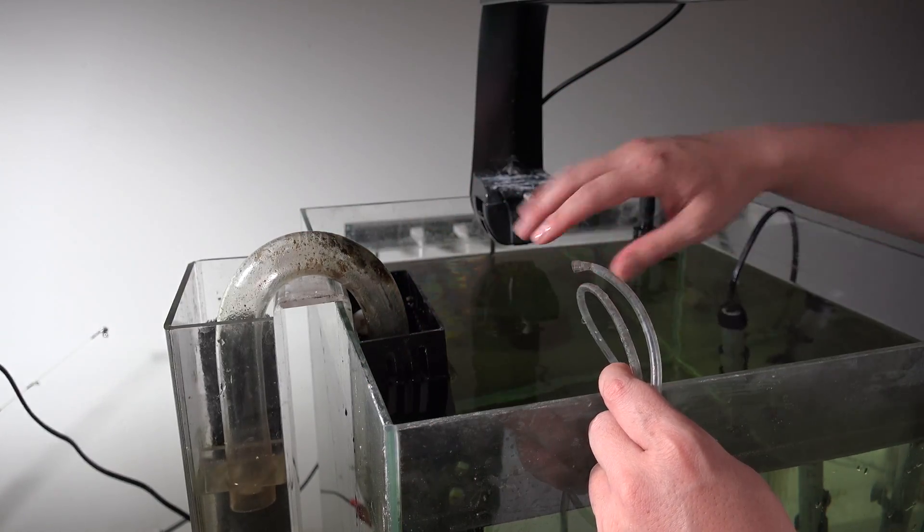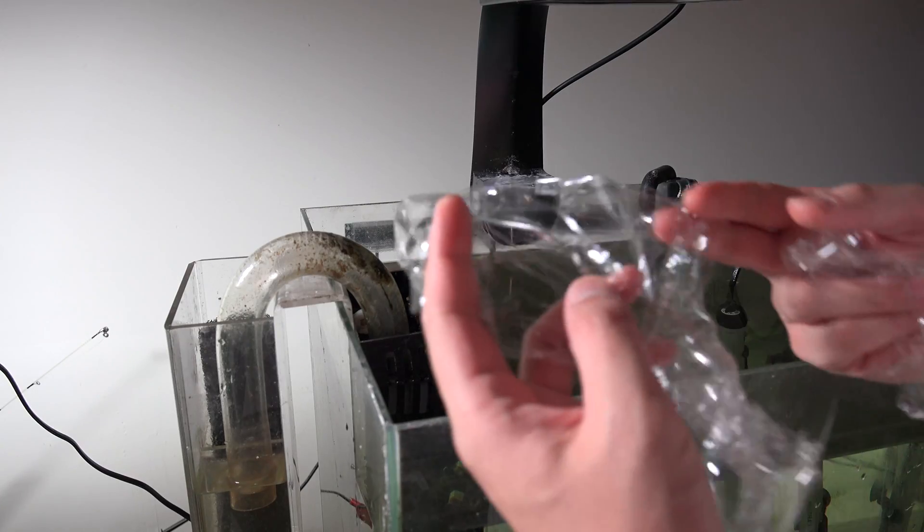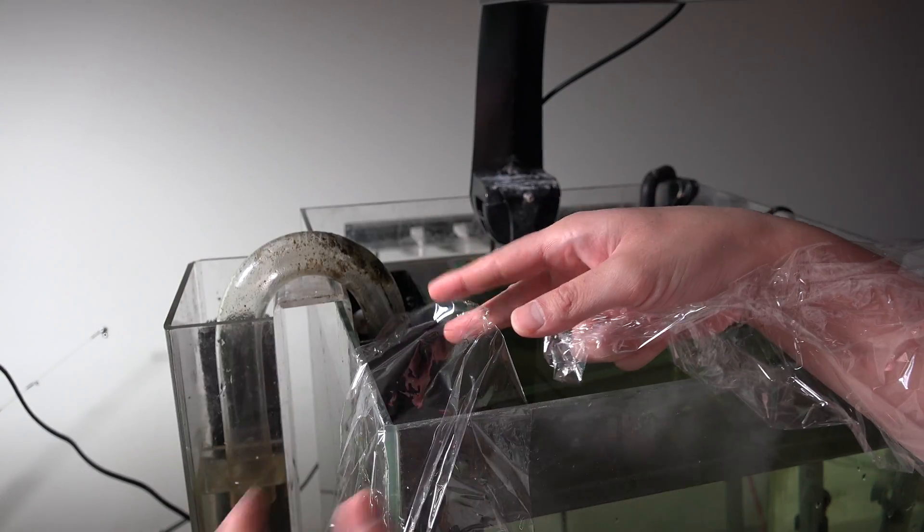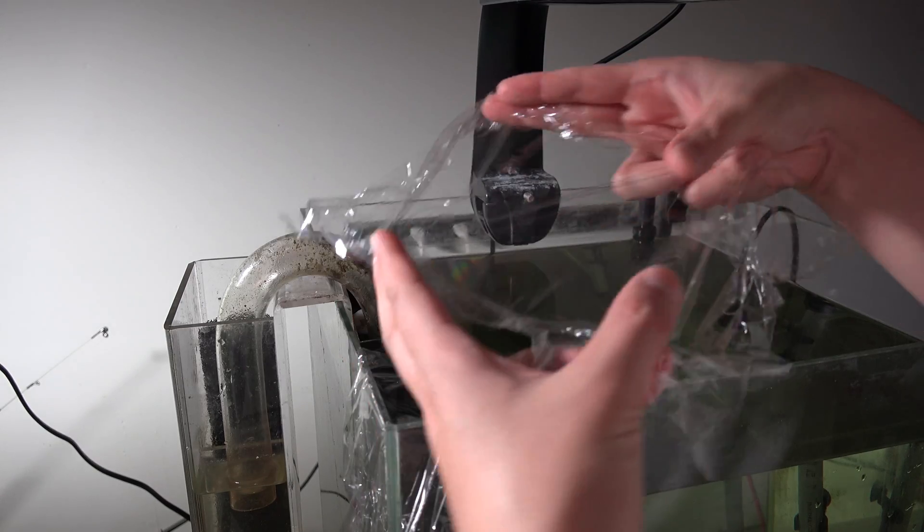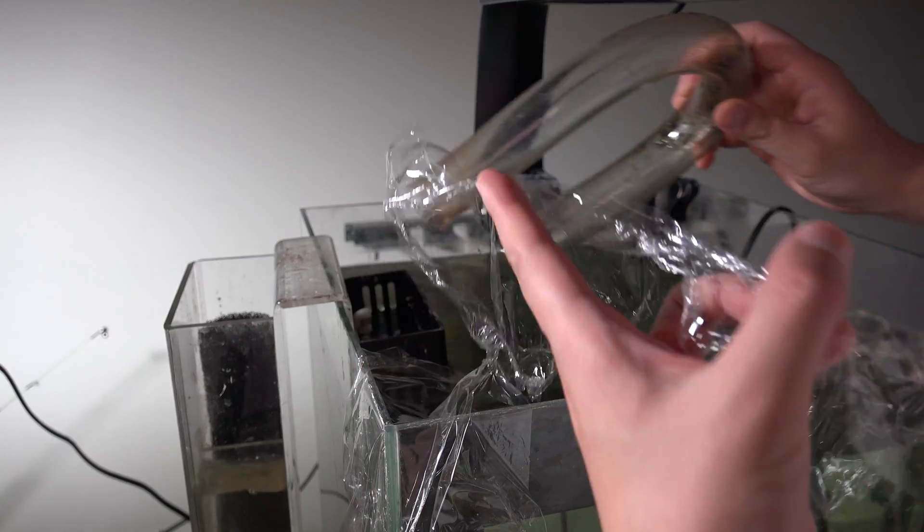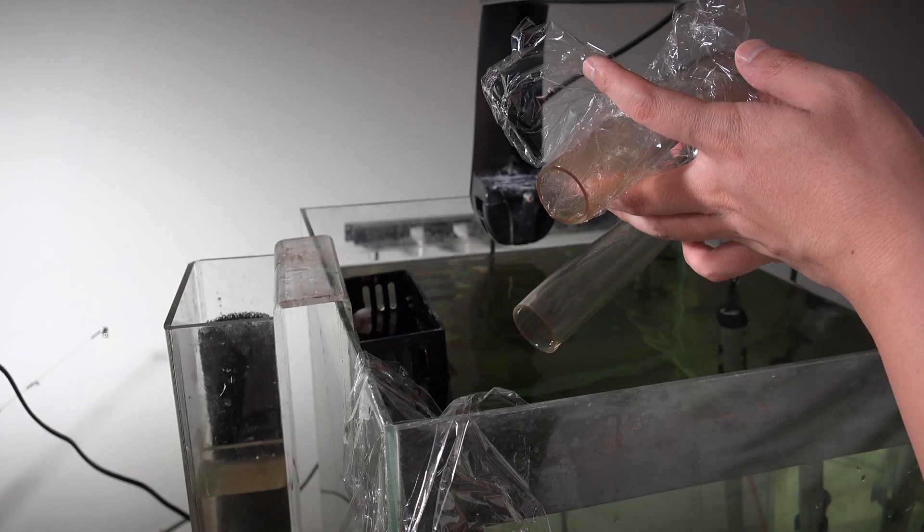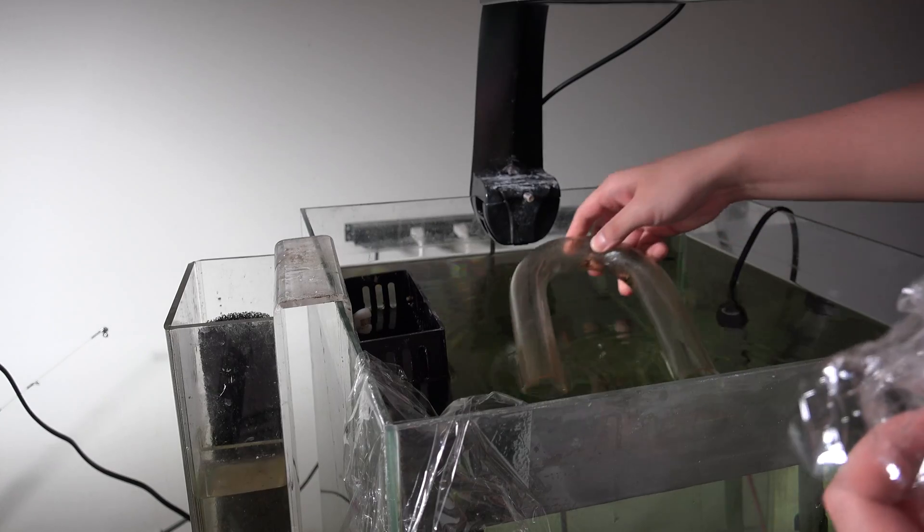I'm going to show you some other methods that you can just grab around the house to start a siphon with the tube. Moving on to method number two: saran wrap. Yes, saran wrap is going to be your friend. You want to basically take two pieces of saran wrap big enough to cover the hole here. You're basically going to cover the hole like that.